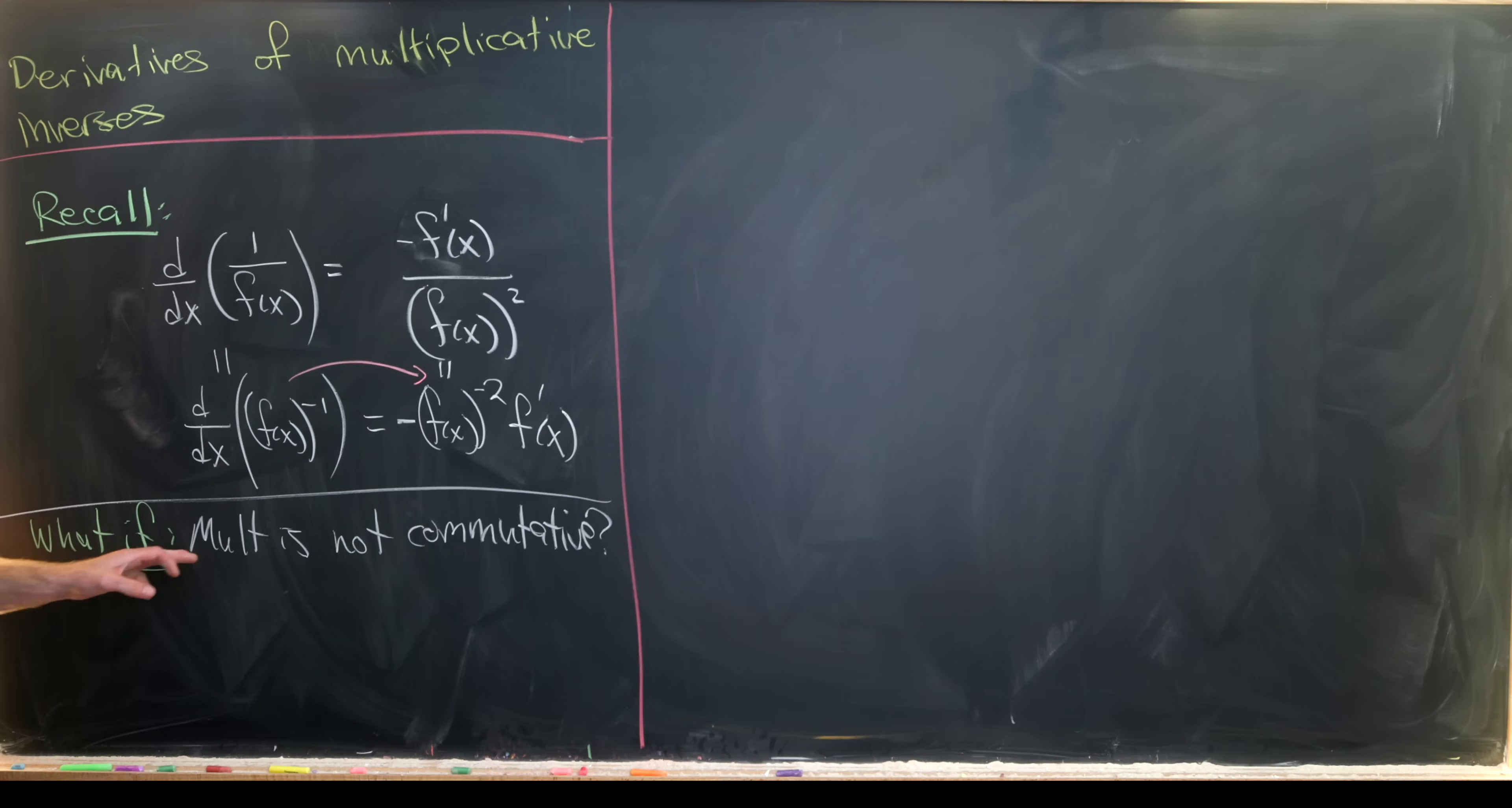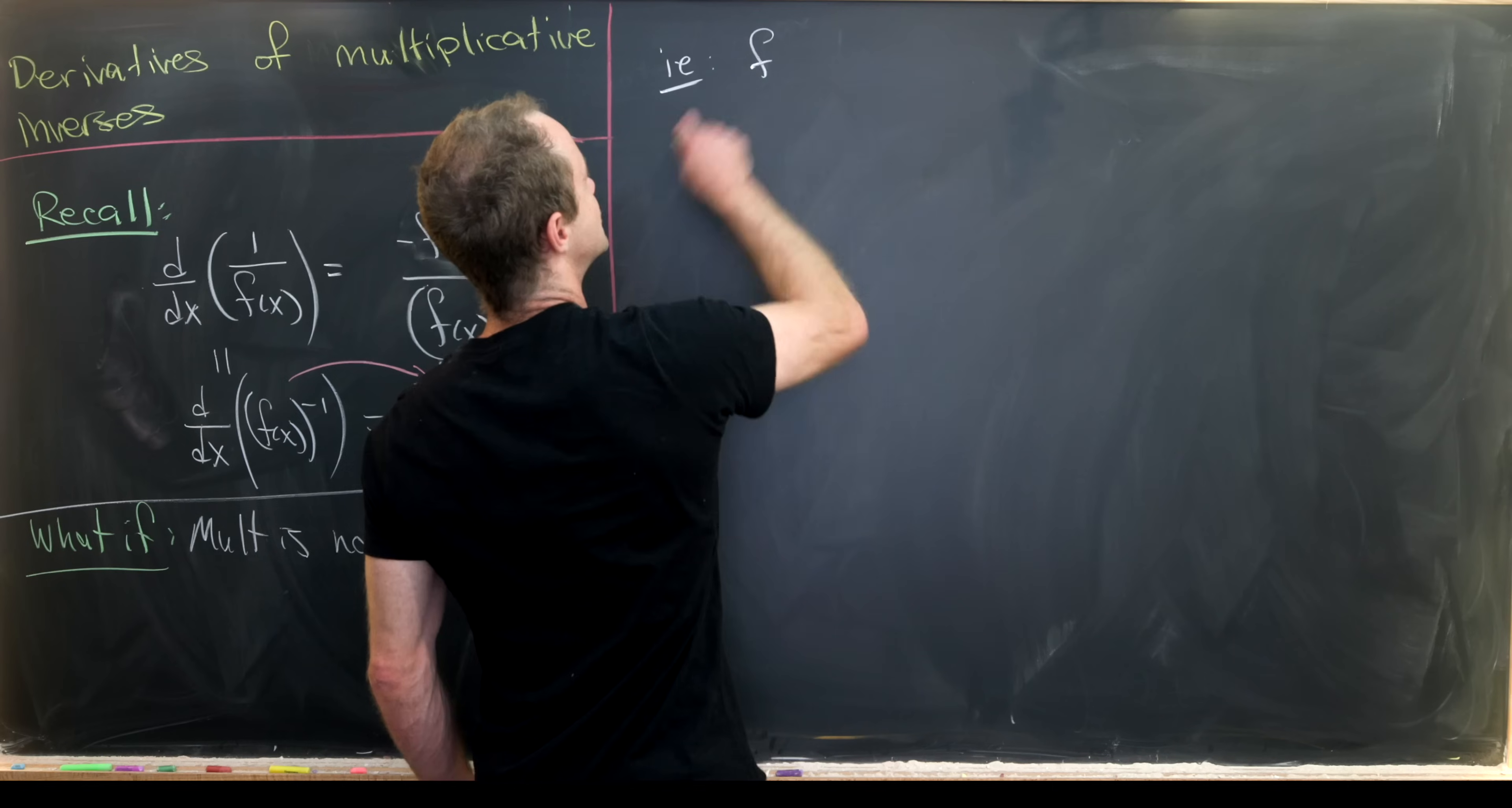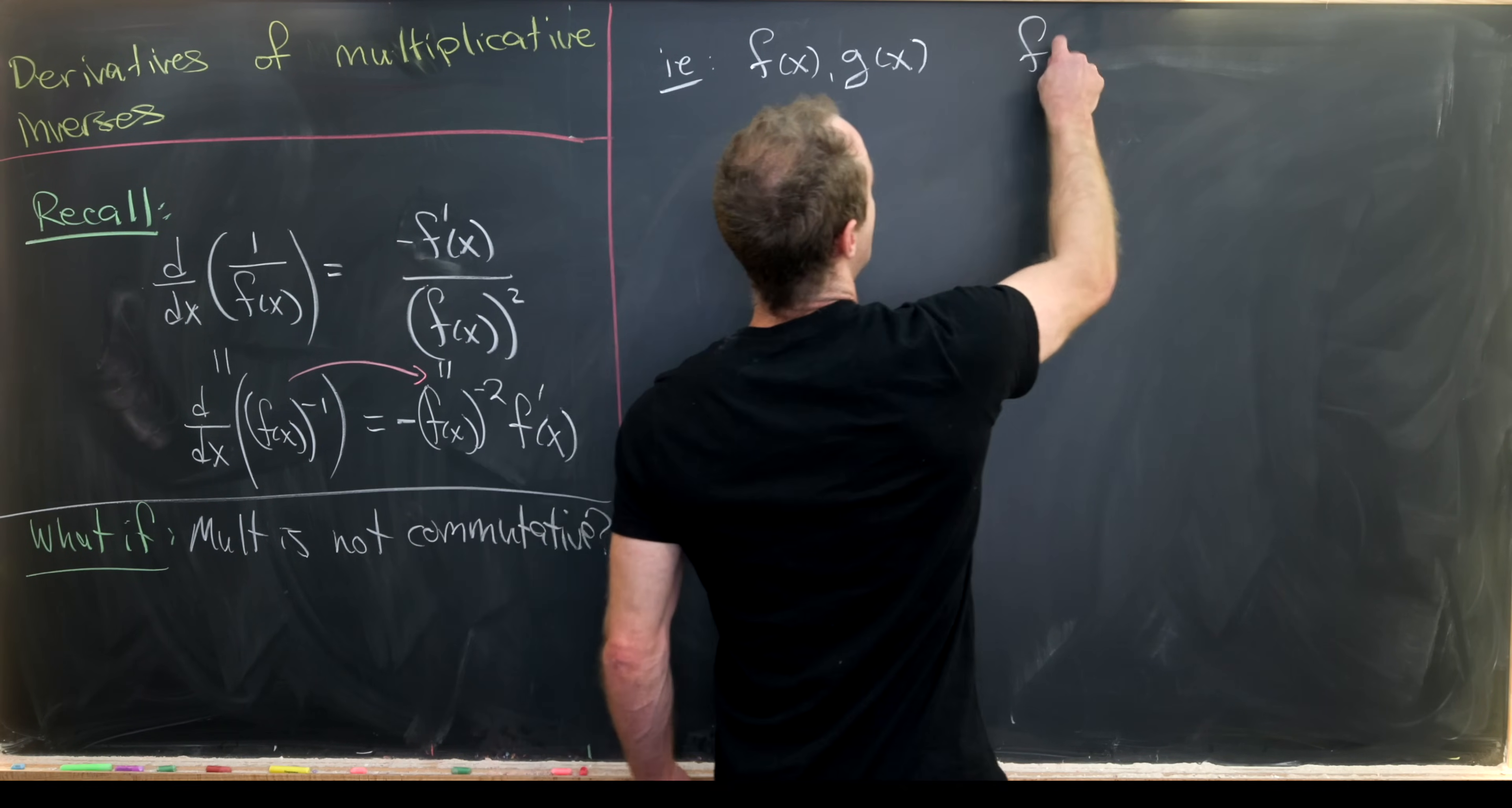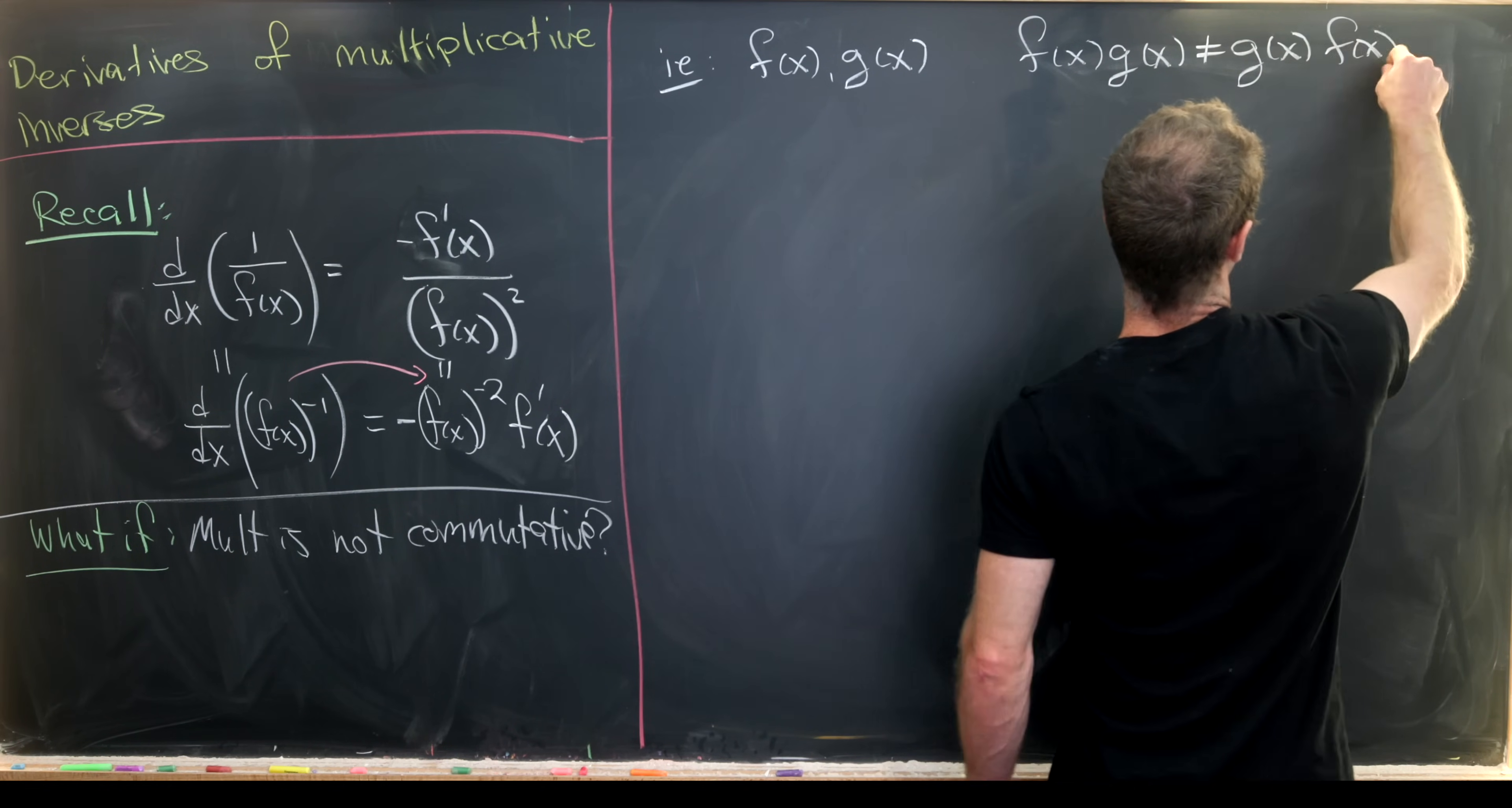Now let's look at this question: what if multiplication is not commutative? What I mean by that is, if we have two functions f(x) and g(x), f(x) times g(x) is not necessarily g(x) times f(x).